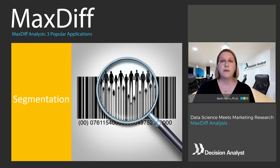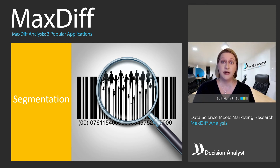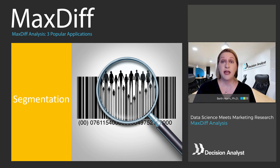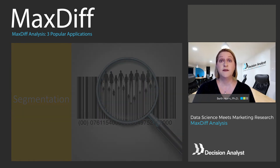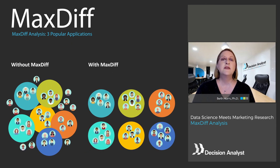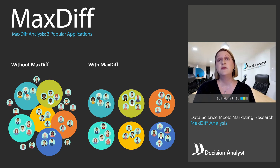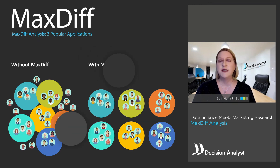The third popular application for MaxDiff is for segmentation. The MaxDiff survey task forces respondents to make a discriminating choice about which item is most preferred and which item is least preferred. There's no possibility to encounter scale bias in which ratings are bunched up at the top end or bottom end of the scale. These discriminating choices help differentiate potential segments. Therefore, using MaxDiff preference scores as one of the inputs into a segmentation model is a great way to promote more distinct groups.